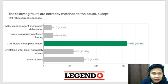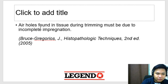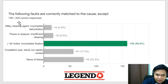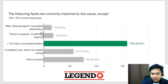The following faults are correctly matched to the cause except — the correct answer is air holes. Air holes are usually due to incomplete impregnation. The milky clearing agent is usually due to incomplete dehydration — kapag may remaining water pa sa tissue tapos nilagay mo sa xylene, makikita mong naging milky yung xylene. Tissue is opaque usually due to insufficient clearing. Crystalline wax means the wax was not rapidly cooled. Memorize these fault-cause pairings.